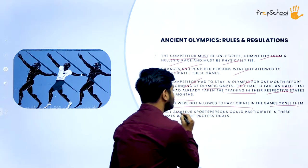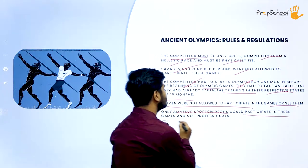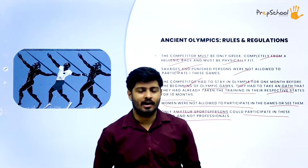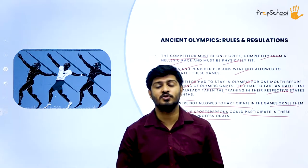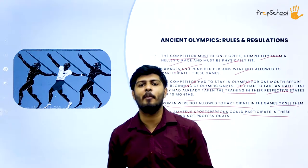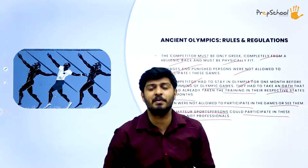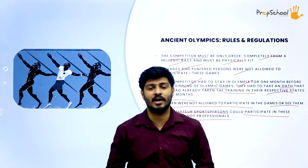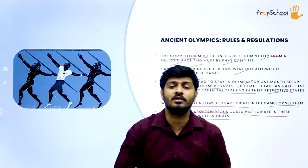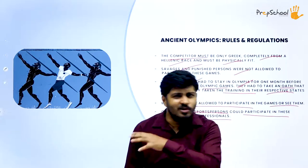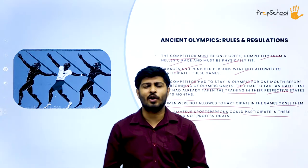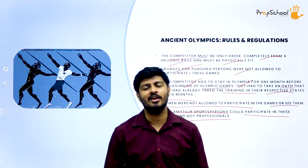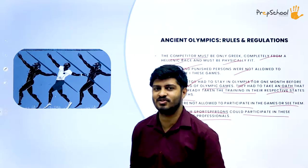Moving on to the next rule: only amateur sportspersons could participate in these games, not professionals. The logic behind that was, if professionals participated, they would already be perfect and there would be no competition. So they wanted amateurs to participate, fail, try their best and improve. Basically, the people who were already at the top — the professionals — were not supposed to participate. Only the amateurs were allowed. These are some of the rules they had; some felt reasonable for that period, and some were quite unusual. All of them are part of history.